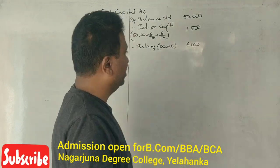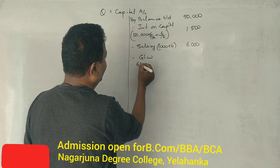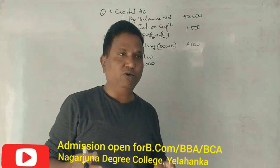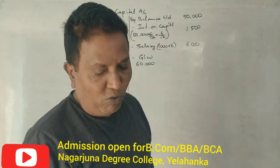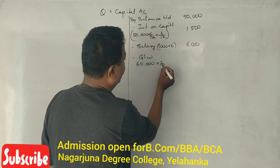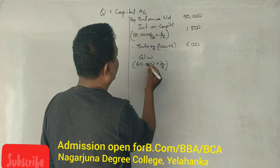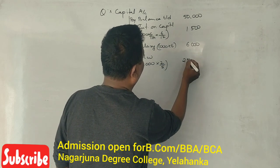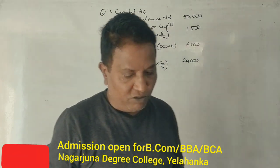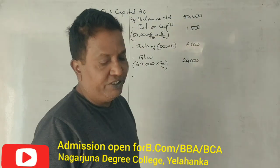For goodwill, the total goodwill of the firm is 60,000, and Q's share is 2/5, which equals 24,000. The commission is 4,000.